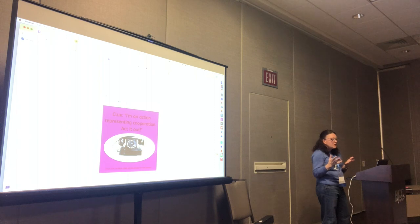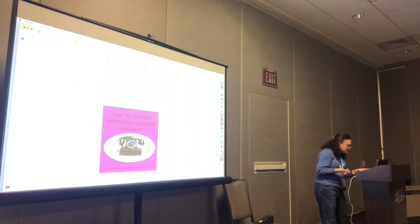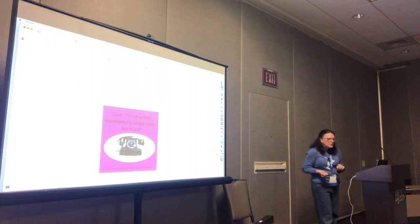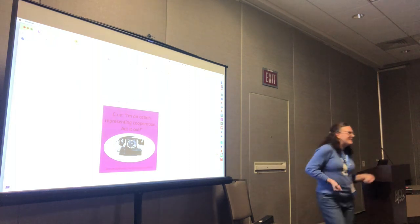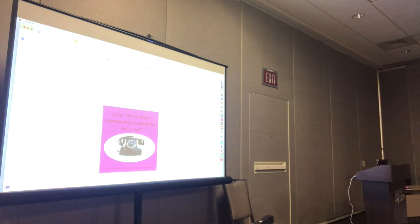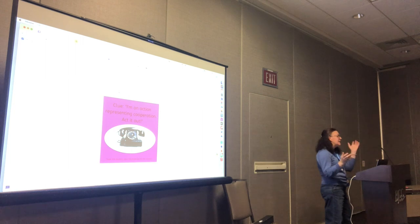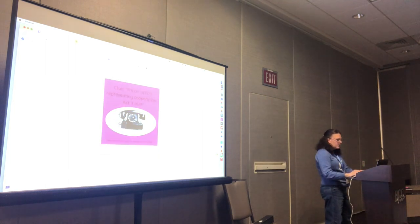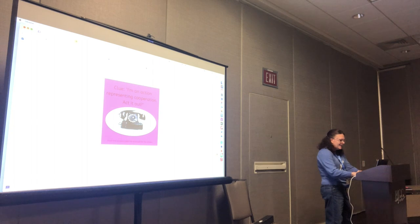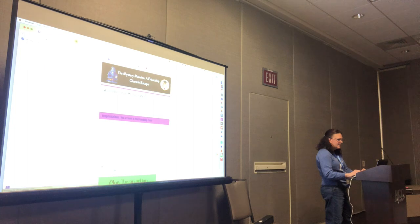Another student opens the next envelope. The clue reads: I am an action representing cooperation — act it out. Someone from the audience comes up and acts it out, and the answer is HIGH FIVE. If you type it wrong — say just FIVE — the form says nope, try again, the answer should be in all caps. Then you type HIGH FIVE correctly and move on.